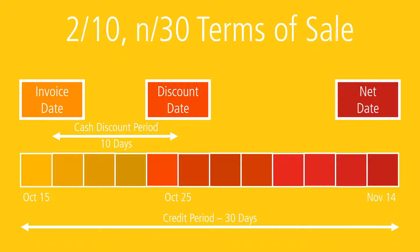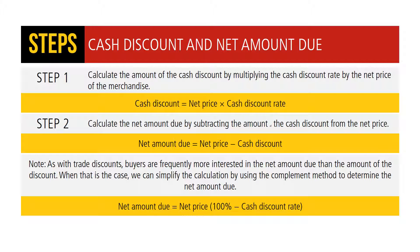After the cash discount has been deducted, the shipping charges are added back into the invoice total. There are two basic steps to calculate cash discount and net amount due. Step 1: calculate the cash discount by multiplying the cash discount rate by the net price — cash discount equals net price times cash discount rate. Step 2: calculate the net amount due by subtracting the cash discount from the net price — net amount due equals net price minus cash discount. Buyers can also use the complement method: net amount due equals net price times (100% minus cash discount rate).